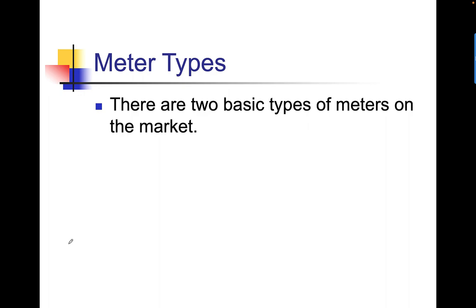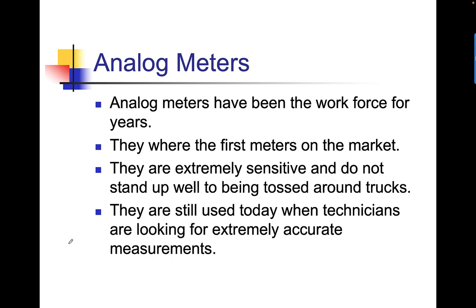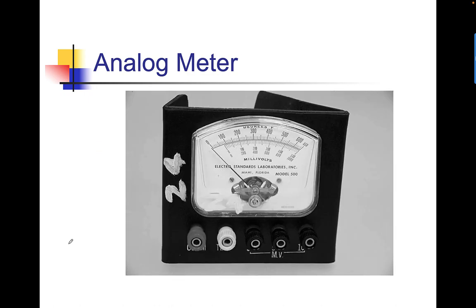There are two basic types of meters on the market. First, the analog meters that have been the workforce of the industry for years. These were the first meters on the market. They're extremely sensitive and do not stand up well to being tossed around trucks. They're still used today when technicians are looking for extremely accurate measurements. This is an example of an analog meter. You do have to look hard to find them anymore because we've gone to mostly digital meters.